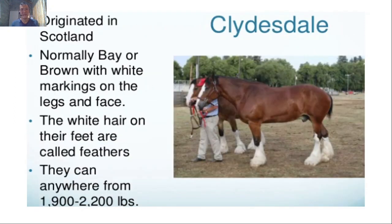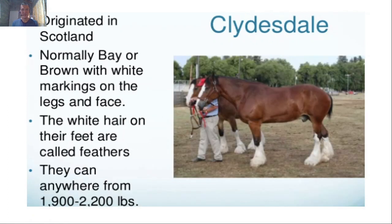Next is the Clydesdale from Scotland, normally bay or brown with white markings on the legs and face. They have white hair around their hooves — this is called feathers. Note that term in case it comes up in an exam. Their weight is similar to other draft breeds, around 1,900 to 2,000 pounds. As you can observe, cold-blooded draft breeds are significantly larger than warm-blooded breeds.